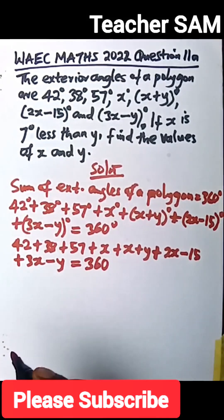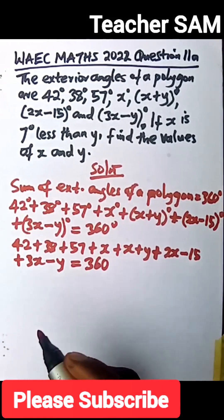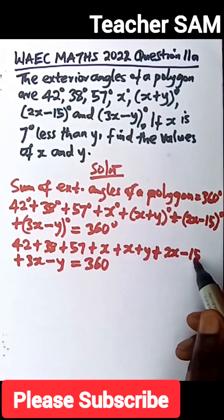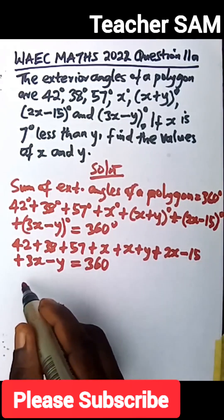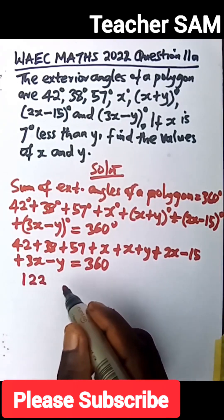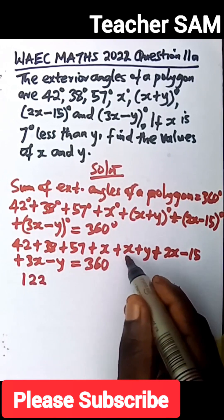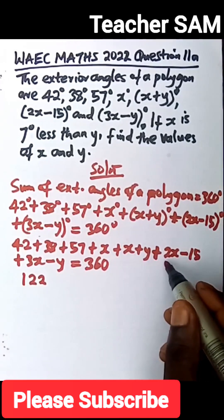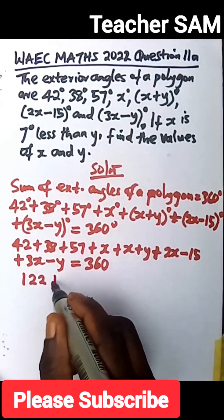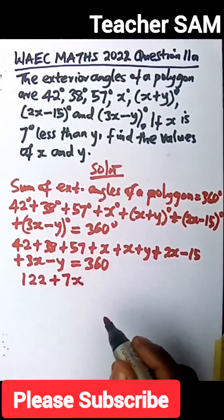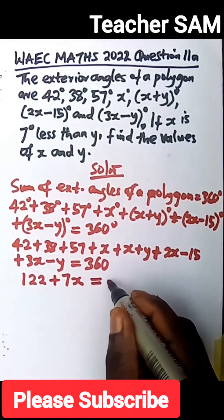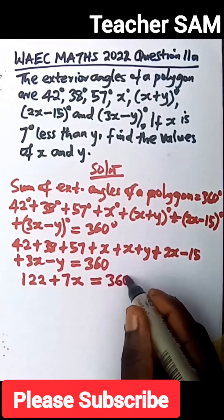Now, if we add up the numbers, 42 plus 38 plus 57 minus 15, then if you do that correctly, you have 122. We have x plus x, we have 2x, plus 2x, we have 4x, plus 3x, we have 7x. So that is plus 7x. Now, plus y minus y, that is 0, so y is gone there. So we have this to be equal to 360.